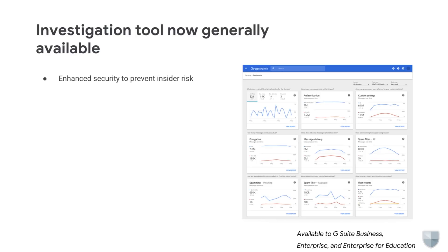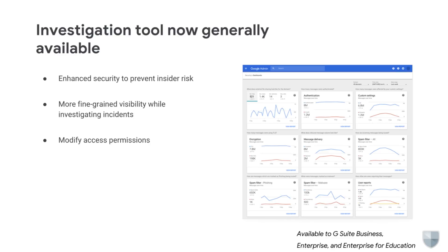The tool will also have the following key new features at release: require a second admin to verify large actions in the investigation tool; email header analysis, which allows you to see important attributes and the delivery path for the email; added visibility into team drive settings and the ability to modify access permissions directly from the tool; and user autocomplete of emails and names from your organization as you type in the investigation tool. See the Help Center for more information on the tools available.